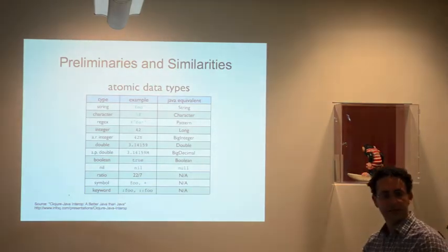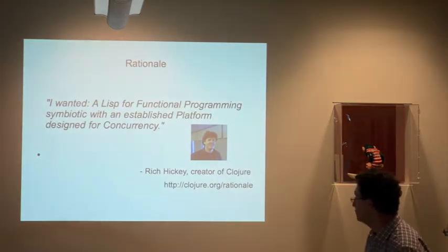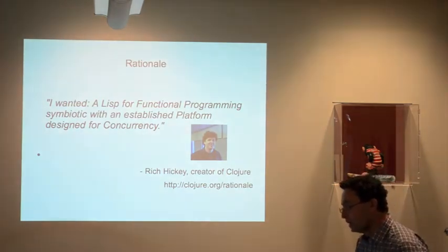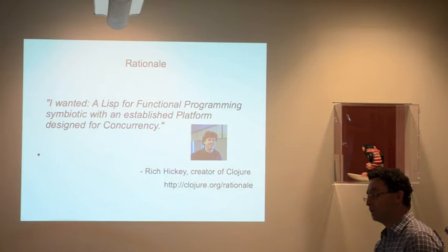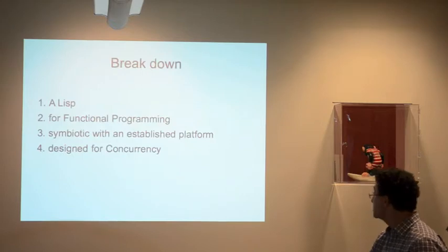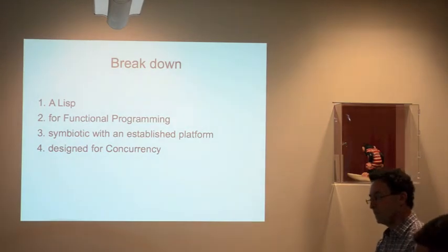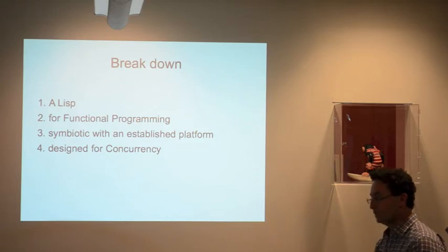This is the rationale — a picture of Rich Hickey, who created Clojure. His videos are very well researched and well expressed. When asked why he created Clojure, he said: 'I wanted a LISP for functional programming, symbiotic with an established platform, designed for concurrency.' Let's break that into four things: what a LISP is, functional programming, symbiotic with an established platform (initially the JVM), and what designed for concurrency really means.